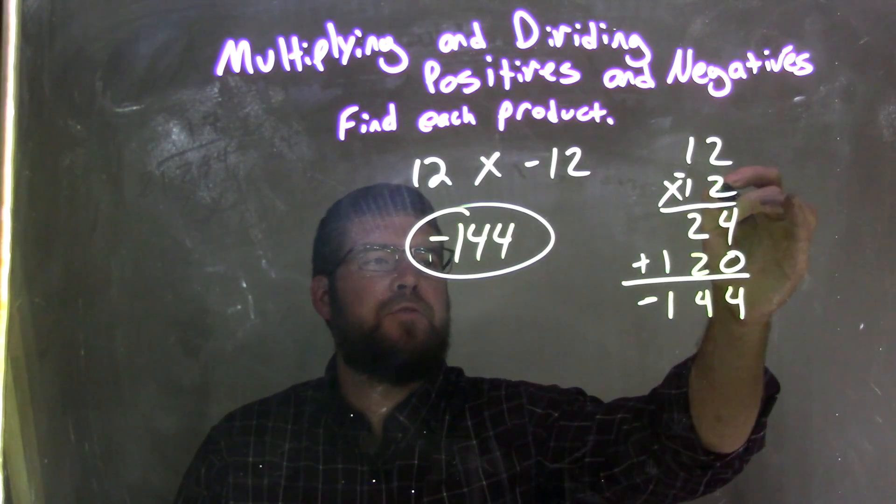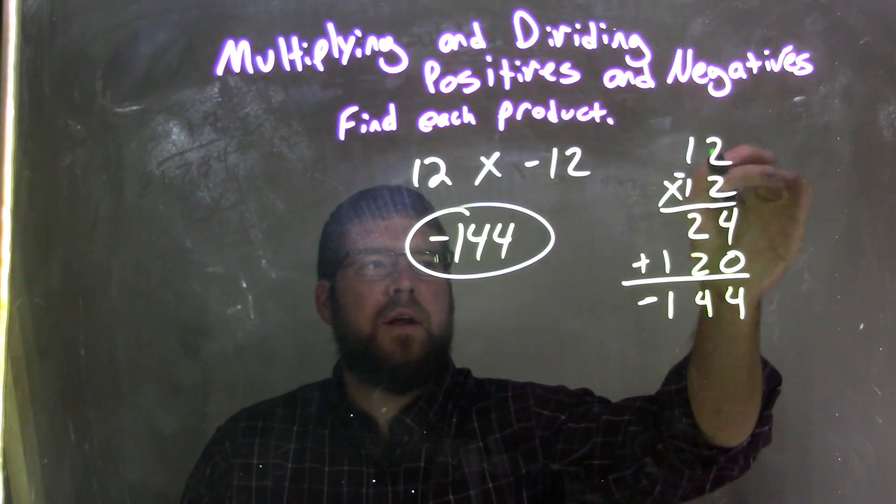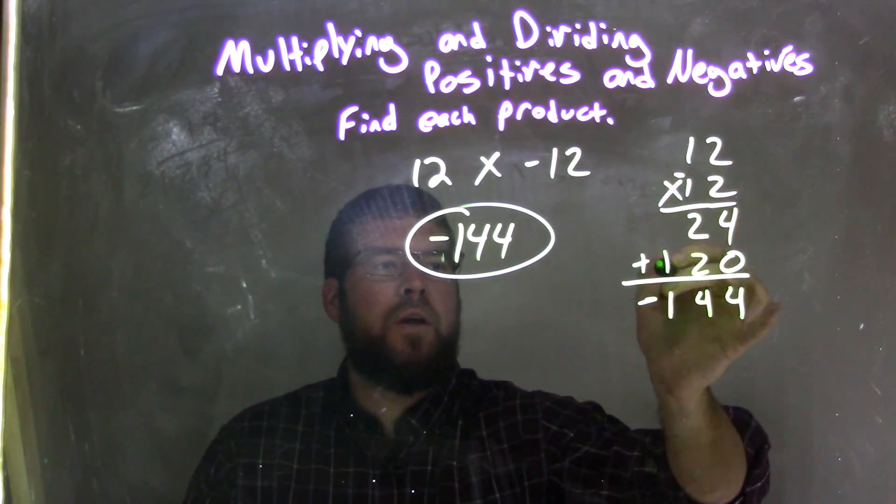2 times 2 is 4. 2 times this 1 is 2. We put a place value 0 here. We start with 1s now. 1 times this 2 is 2, and 1 times this 1 is 1.